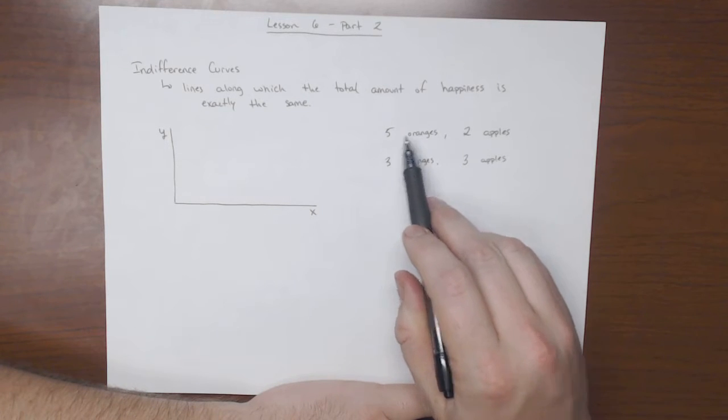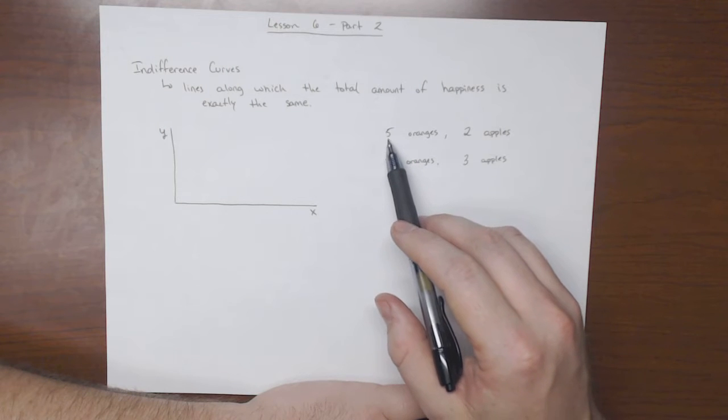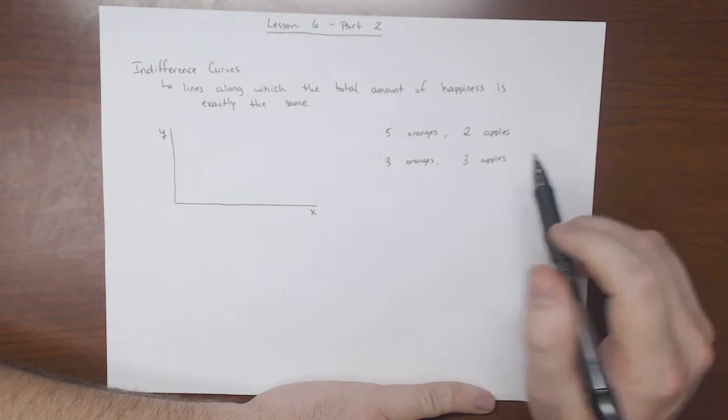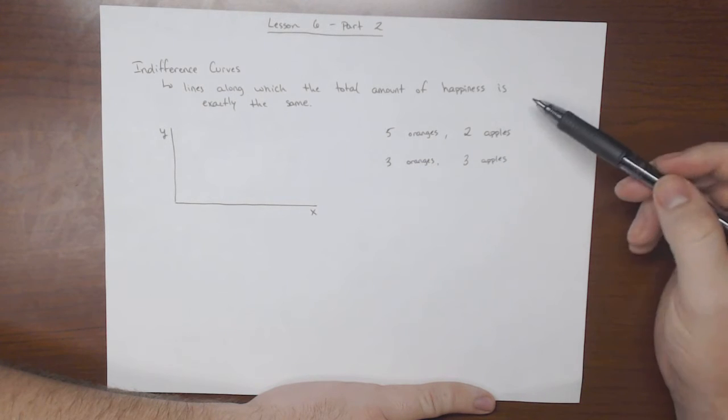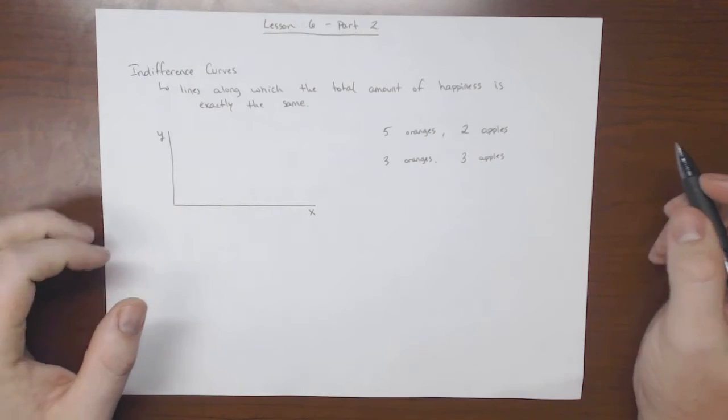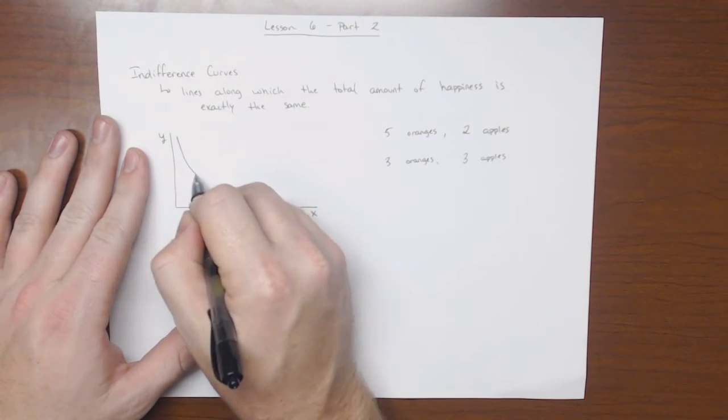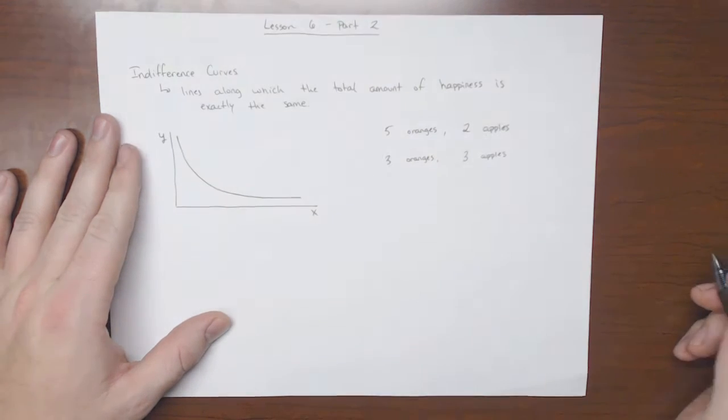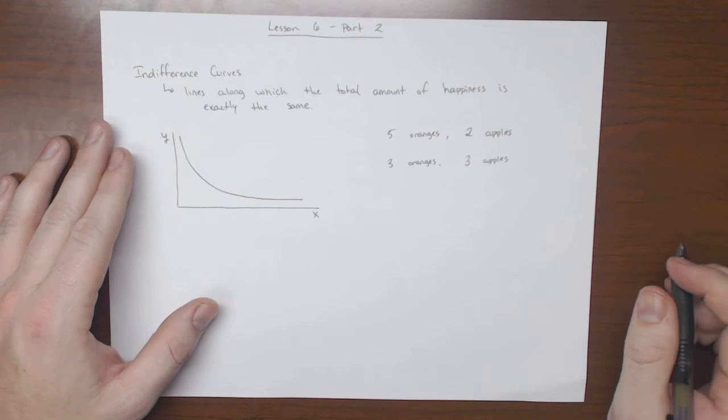Or, if you had five oranges and two apples, you would be willing to give up two oranges to get one more apple. All right, and if you did that, you would be equally happy. So an indifference curve is a line that shows the happiness that we get from different combinations of goods.